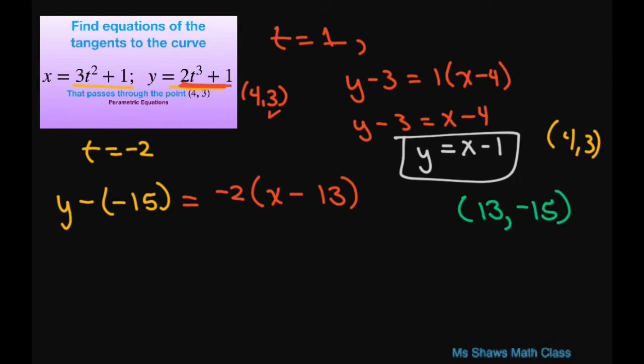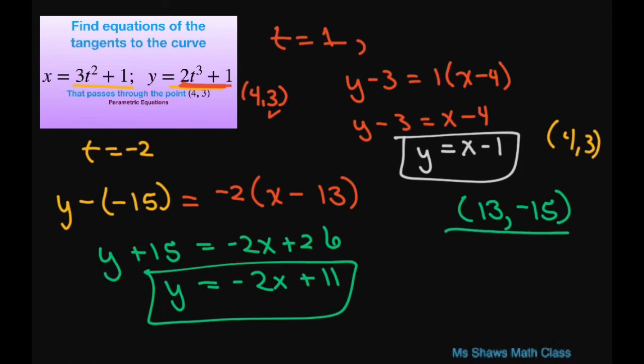This is going to give you y plus 15 equals negative 2x plus 26. This simplifies to y equals negative 2x plus 11 tangent to the curve at 13 comma negative 15.